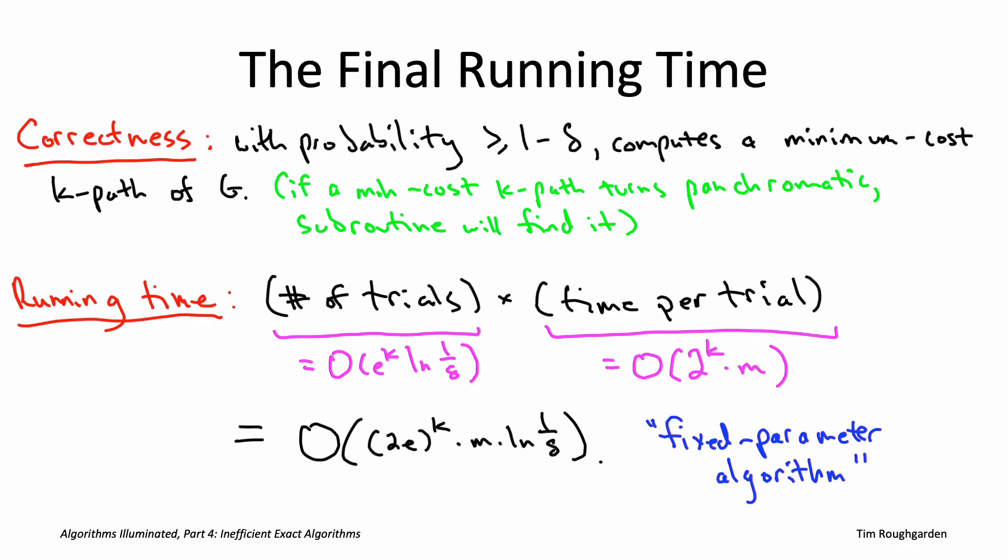So that wraps up our discussion of the color coding algorithm and more generally of exact algorithms for NP-hard problems that have provable running time bounds better than exhaustive search. For the rest of this chapter, for the rest of chapter 21, I want to discuss state-of-the-art technology that does not necessarily have provable running time bounds better than exhaustive search, but can be super effective for tackling NP-hard problems in applications. State-of-the-art solvers for mixed integer programming and satisfiability. We'll start talking about that next. I'll see you then.